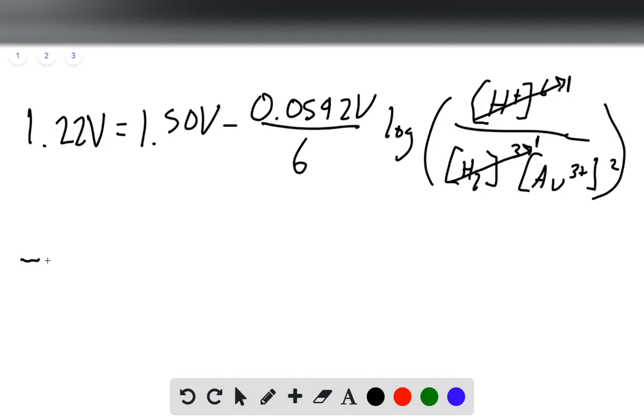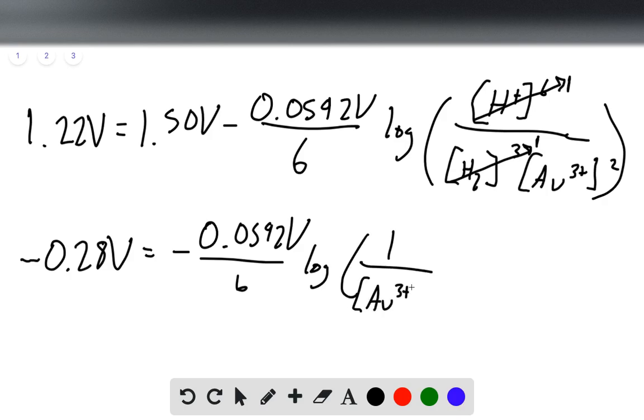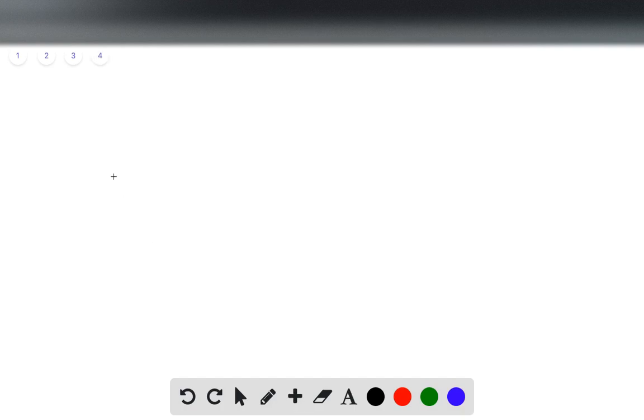So now we have, if we subtract 1.50 volts, we have -0.28 volts equals -0.0592 volts over 6 log of 1 over [Au³⁺]². And so now we just want to solve for that Au³⁺ squared. So we'll go to a new page.